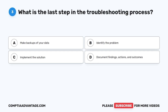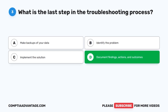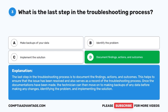Question 3. What is the last step in the troubleshooting process? The correct answer is D. Document findings, actions, and outcomes. The last step in the troubleshooting process is to document the findings, actions, and outcomes. This helps to ensure that the issue has been resolved and also serves as a record of the troubleshooting process.